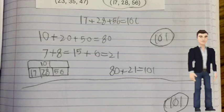So first I added the 10s and then I got 80, then I added the 1s and I got 21, and then I added those two numbers together and I got 101.